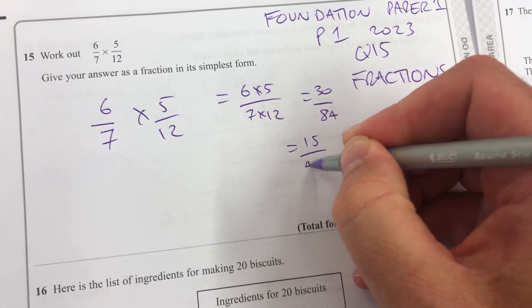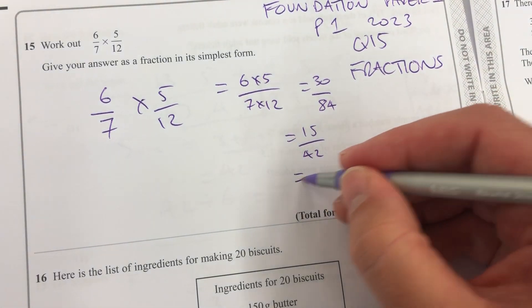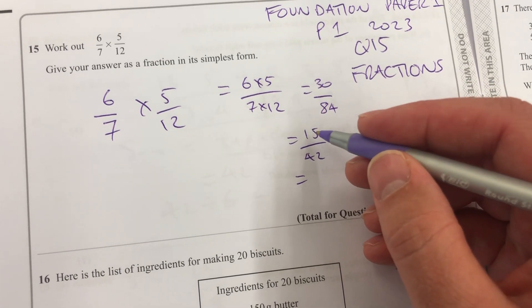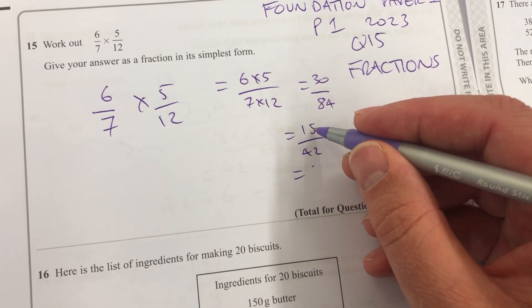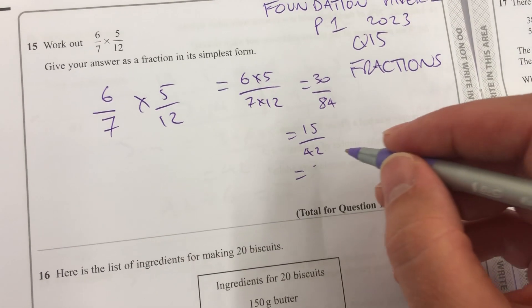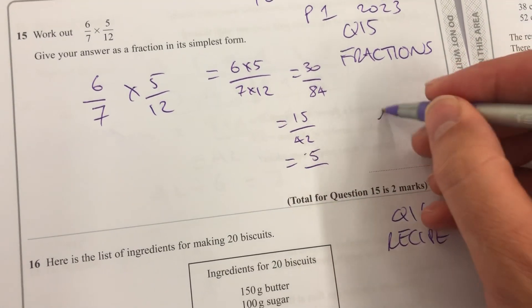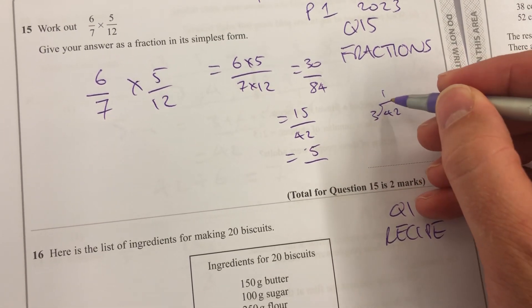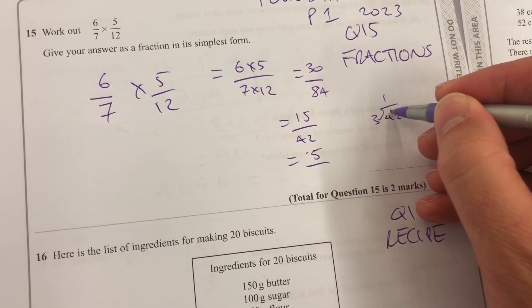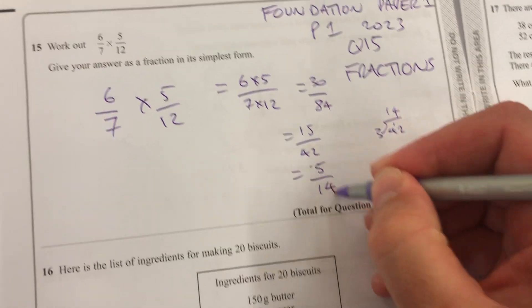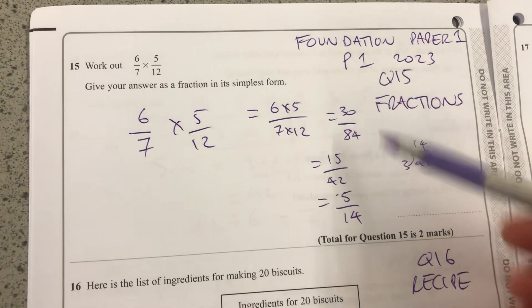That simplifies to 15 over 42. They're both multiples of 2, both multiples of 3. Divide 15 by 3 and I get 5. Divide 42 by 3, I get 14. So 5 over 14. Now, that's absolutely fine.